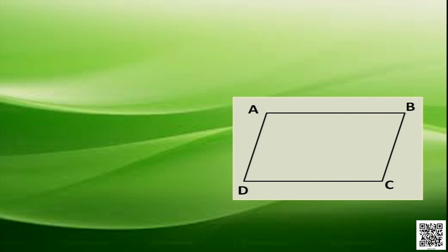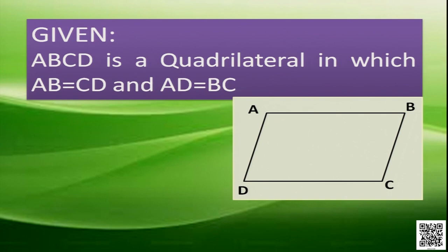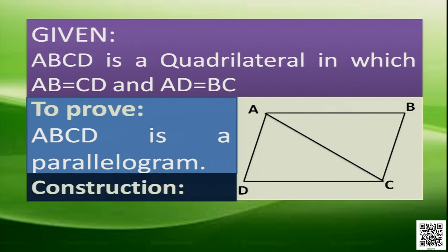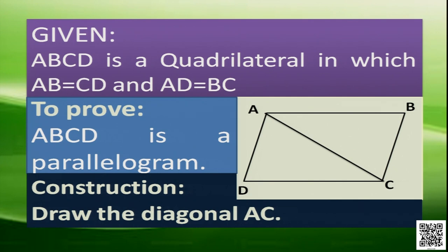Let us see how to prove it. We draw a figure where ABCD is a quadrilateral in which AB equals CD and AD equals BC. We have to prove that ABCD is a parallelogram. As in the previous case, we need a construction. To prove the sides parallel, we need a transversal of AB, CD and BC, AD. So let us draw the diagonal AC.